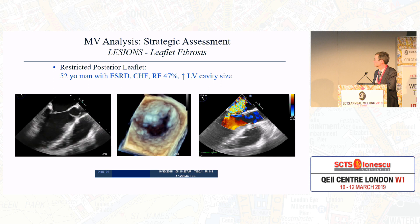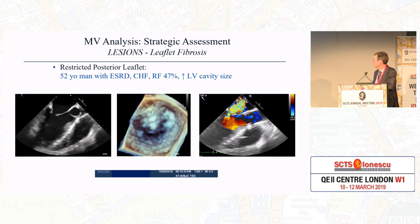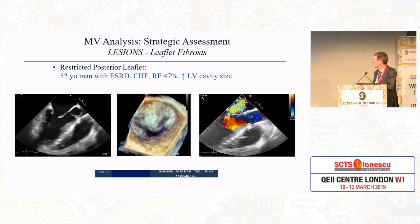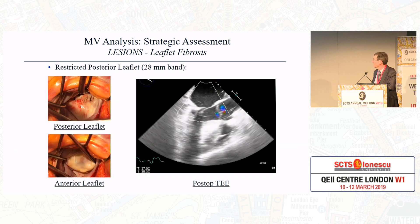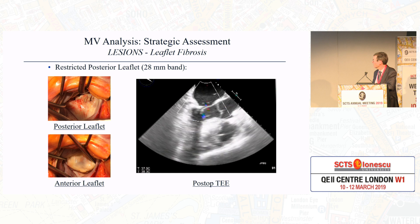Next, we have leaflet fibrosis with restricted motion. Here we can see the posterior leaflet not moving well at all, with malcoaptation and a large regurgitant jet. This patient was measured at a regurgitant fraction of 47%, associated with increased left ventricular cavity size. Following repair with a 28-millimeter band, the annulus was brought together to make orifice closure a consequence of the anterior leaflet, not the posterior leaflet.